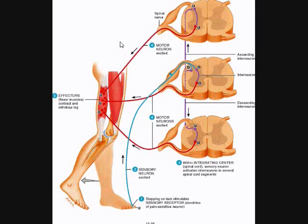This reflex is termed an intersegmental reflex arc because not only does it stimulate a motor neuron at the same segment, but it also uses interneurons that travel superiorly and inferiorly within the spinal cord to stimulate motor neurons that exit on different spinal nerves at different levels — maybe L1, L2, L3, etc. It is a polysynaptic reflex arc because it requires multiple synapses, an ipsilateral reflex arc because the same muscle contracts on the same side as the stimulus, and an intersegmental reflex arc because it requires stimulation of motor neurons from multiple levels of the spinal cord.